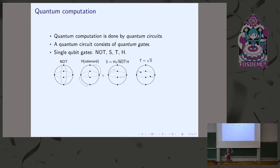A NOT gate is a 180-degree rotation that flips the two poles. The special thing about quantum computing is you don't just have the poles — you can use any position on this sphere and manipulate it. The other gates, like the Hadamard gate, S gate, and T gate, correspond to different types of rotations on the Bloch sphere. For instance, the Hadamard gate interchanges the Z and X axes, making a zero state into a superposition on the equator. The S gate is a half rotation (π/2) and the T gate is a quarter rotation (π/4).